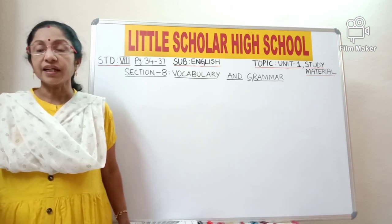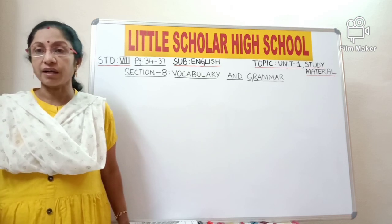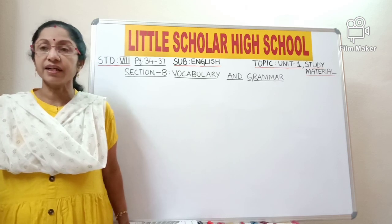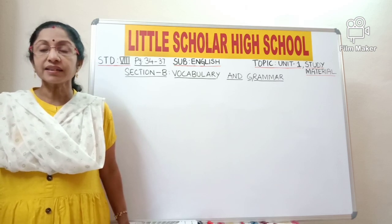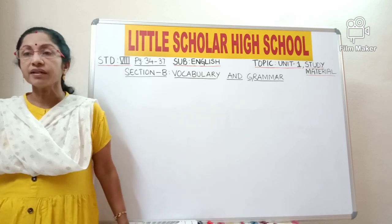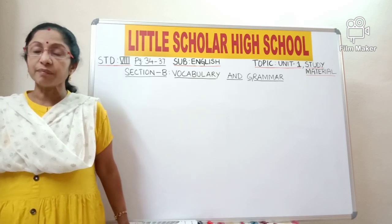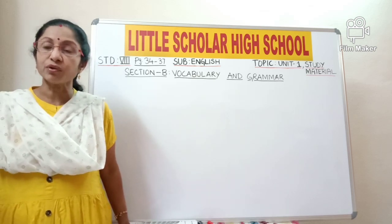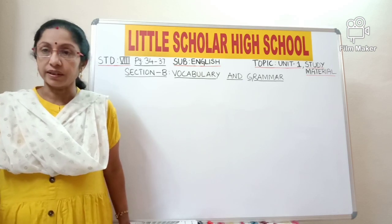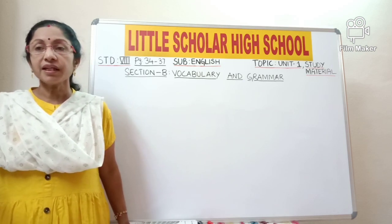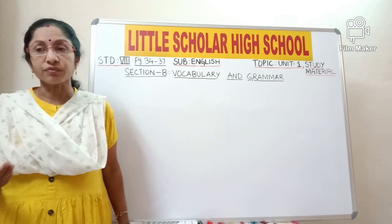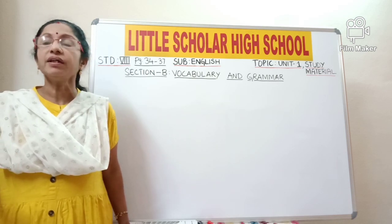A small child can have his own vocabulary — he might be knowing or understanding only a few words. A young man might have more words, understood by more as well as new words. So similarly, as the age increases, a person's vocabulary also increases.